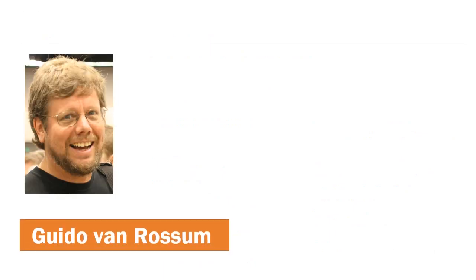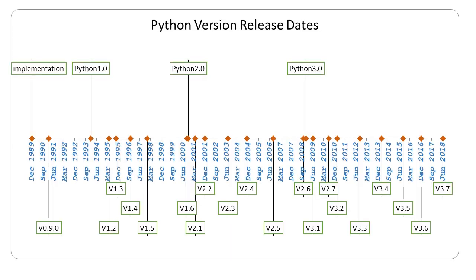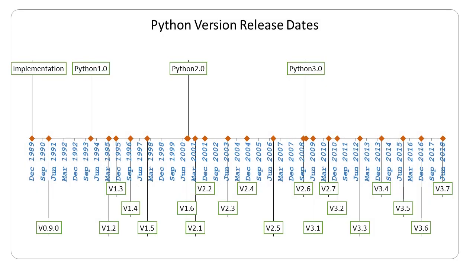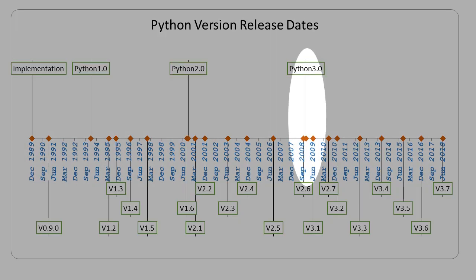Python language was developed by Guido Van Rossum. The first Python version was released in 1991. Python 2 was released in 2000, and Python 3 was released in 2008.